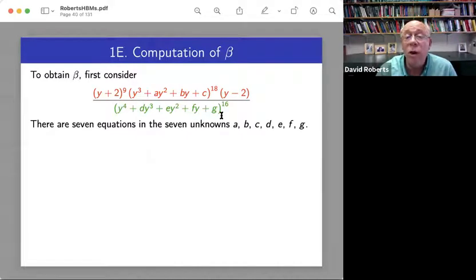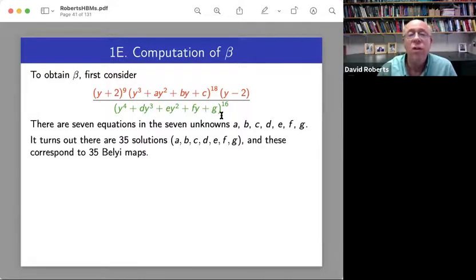So you get to normalize. So I've chosen y equals minus two and y equals two. And otherwise I've kept all coefficients free. So there are seven equations in seven unknowns. The knowns are visible, A, B, C, D, E, F, G.